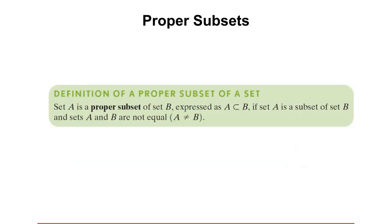Now let's look at the notation for proper subset. This notation indicates that A is a proper subset of B. A is a proper subset of B if A is a subset of B and sets A and B are not equal. This symbol is used to express that A is a proper subset of B — meaning A is a subset of B and A and B are not equal.